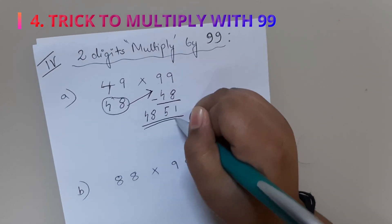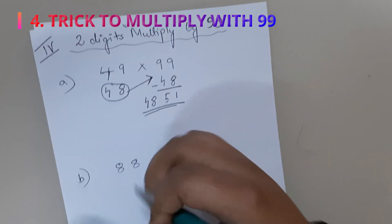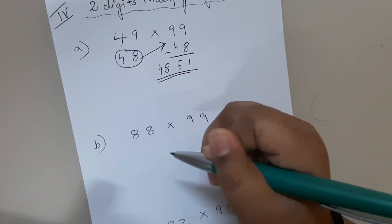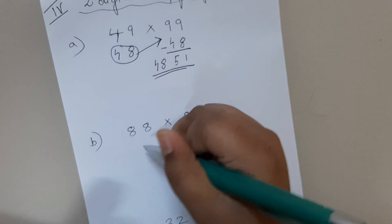Now the answer is 441. Next is 88×99. We have to pick the lesser number, that is 87. Now subtract 99. So 9 minus 7 is 2, 9 minus 8 is 1. And again write 87.